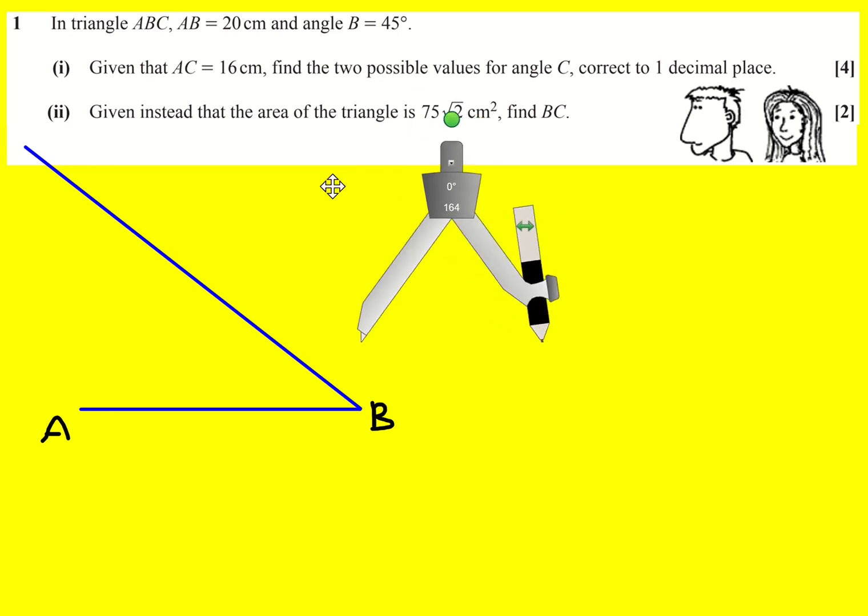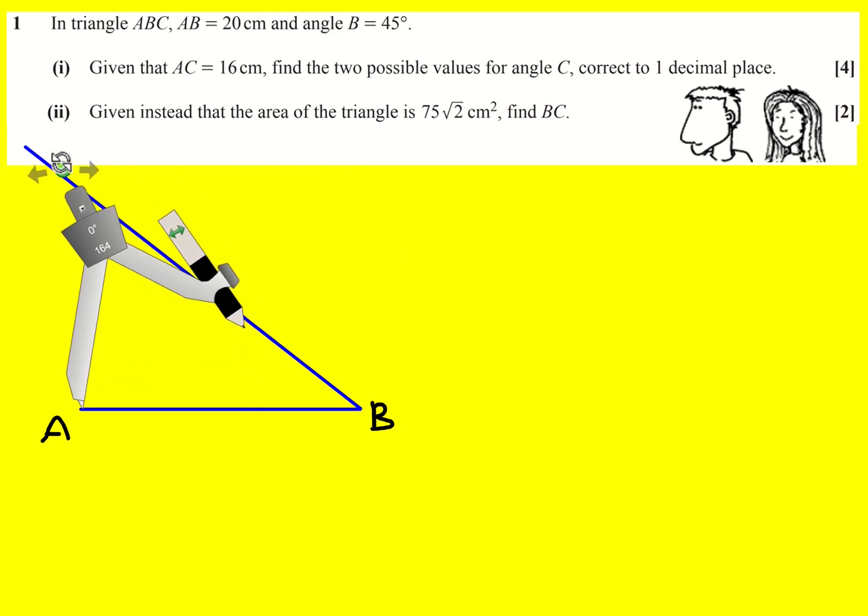And then I want AC to equal 16 centimeters. So let's imagine that I put my compass at 16 centimeters and I bring it round like so. Then there are two places along this line that give me this AC equal to 16 centimeters. That's what my compass is showing me.